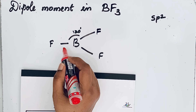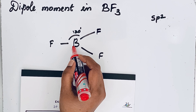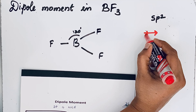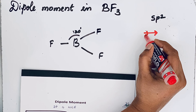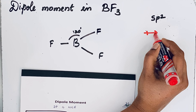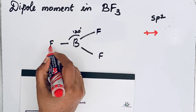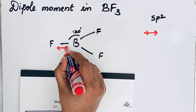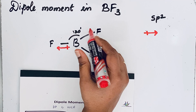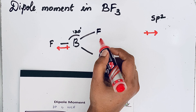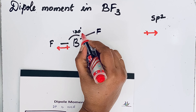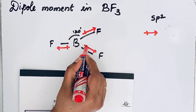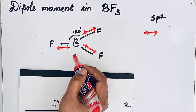In BF3, fluorine is highly electronegative and boron is less electronegative. The dipole moment is represented with a crossed-head arrow — the cross should be near the positive charge and the arrowhead should be near the negative charge. Since fluorine is highly electronegative, the arrow points toward fluorine and the cross is near boron. We draw this for all three B-F bonds in the same way. These are called individual dipoles.